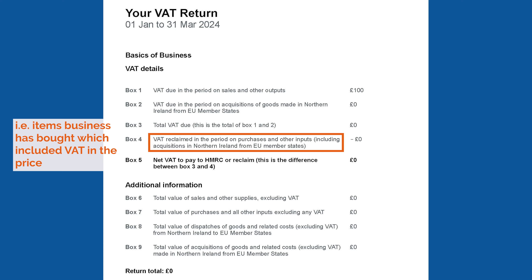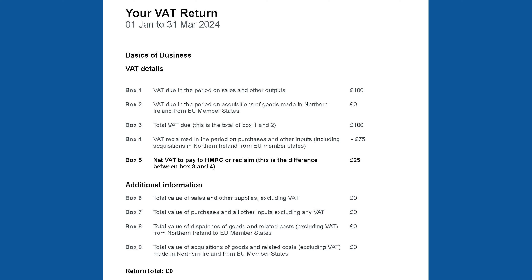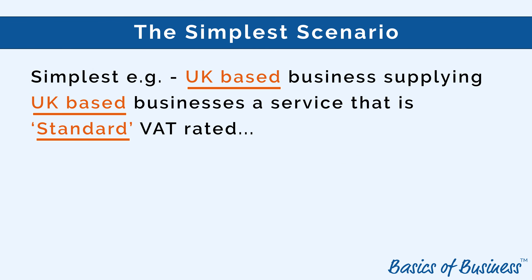I then look at all the people who have charged me for services — is there any VAT on that? I add that all up to see how much VAT I've been charged in the quarter. I put that in box four, then take one away from the other. If I've charged more than I've been charged, I owe the VAT man that amount and I pay it to the VAT office. If it's a negative figure, I've been charged more than I've charged people, and I can actually recover that VAT. That is VAT in a nutshell for a UK-based business supplying UK-based businesses a service that is standard rated.